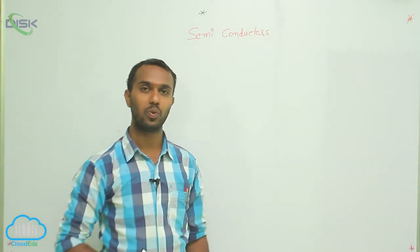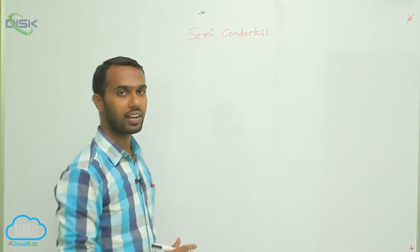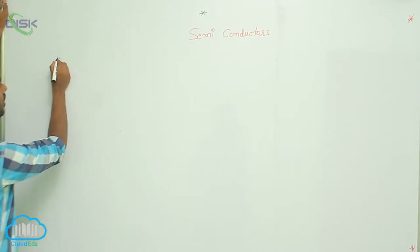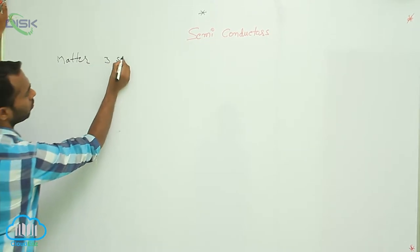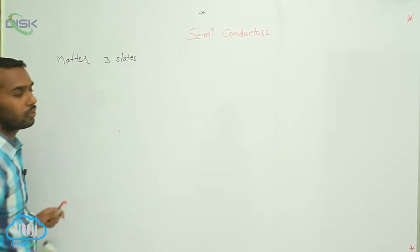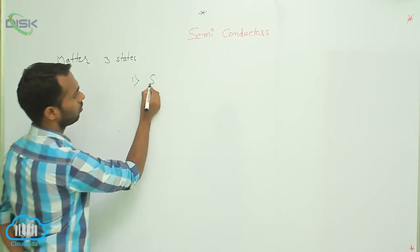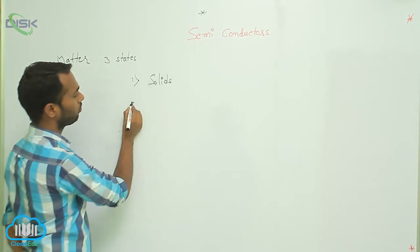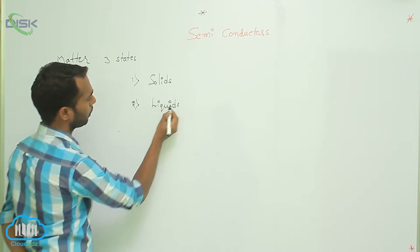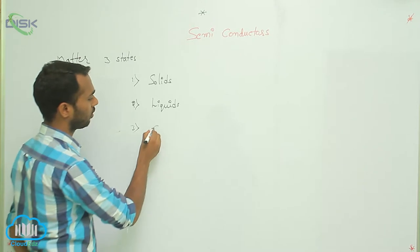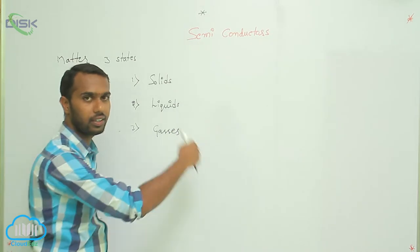Fundamentally, matter exists in three states. What are they? First one: solids. Second one: liquids. And third one: gases. So solids, liquids, and gases are the three states of matter.